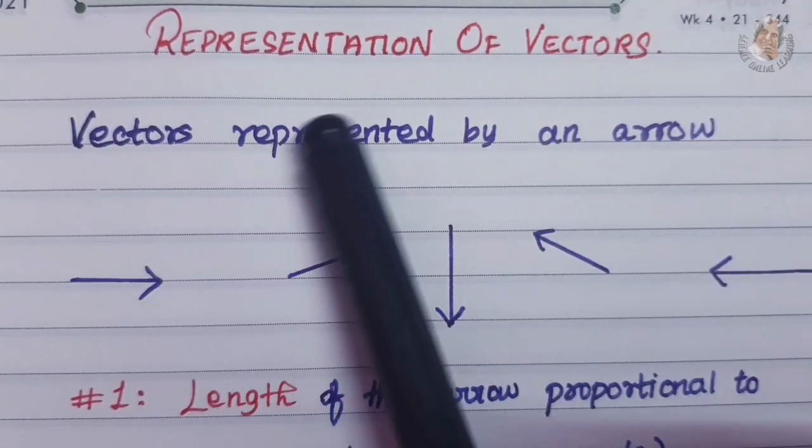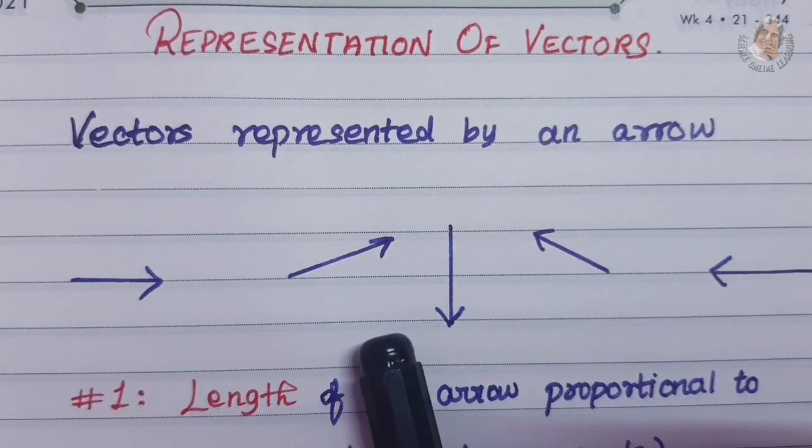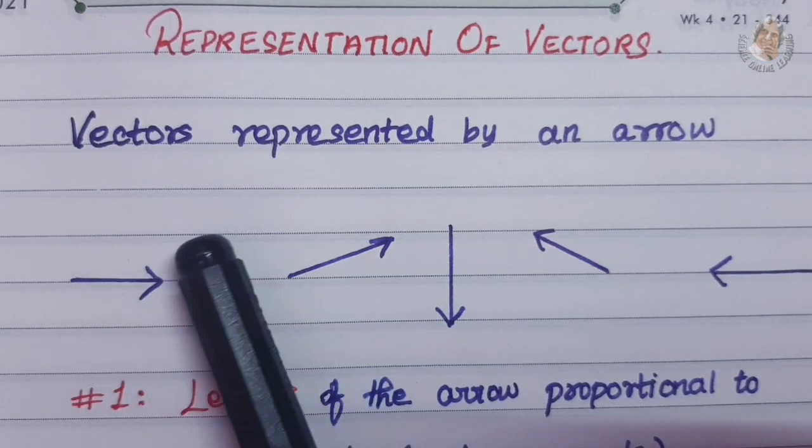If you look at a vector, we represent a vector with arrows. Let's look at the vector first.